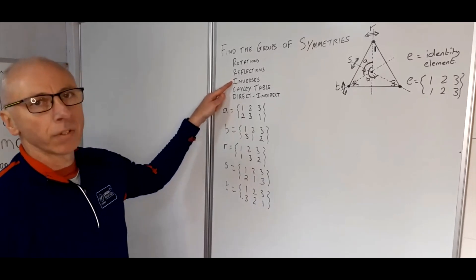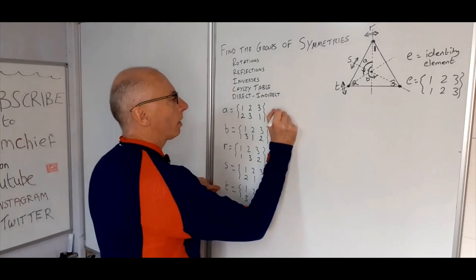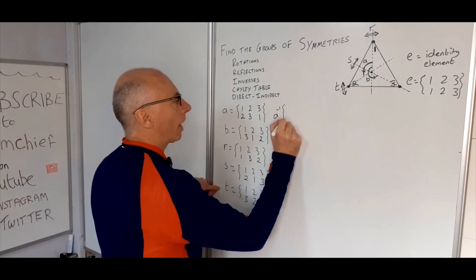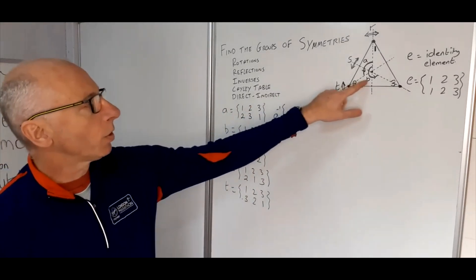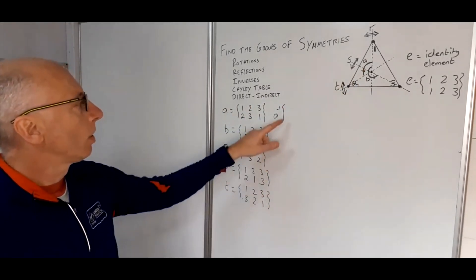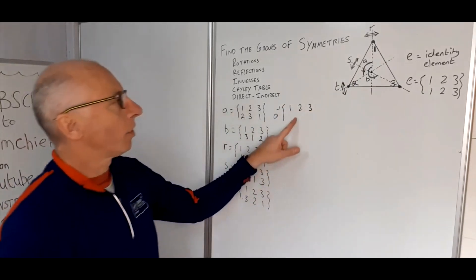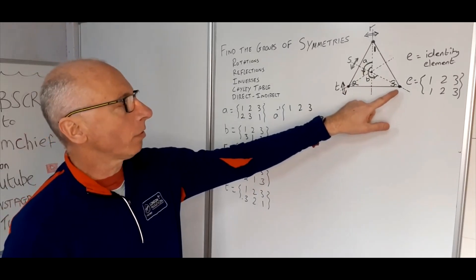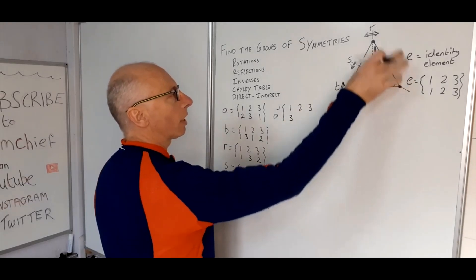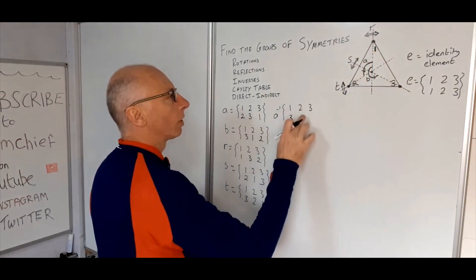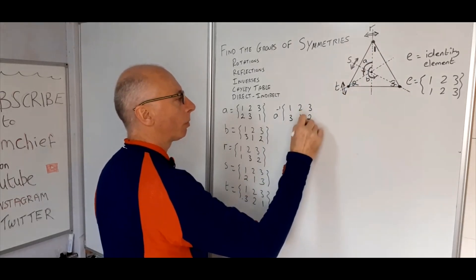Now we're going to find the inverses of each of these. For the inverse of A, we want to undo the rotation through 120 degrees. For point one, where would we start from to get back to one? The answer is three — if A acts on three, we go back to one. Same for two: we'd start at point one; and point three would start at point two.